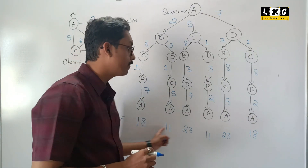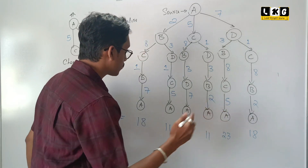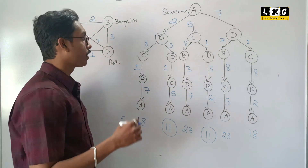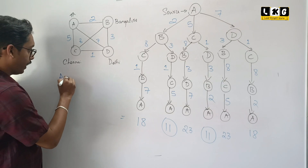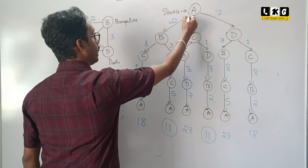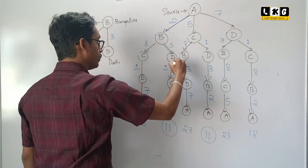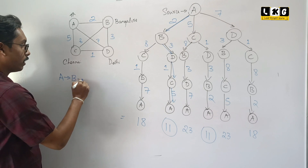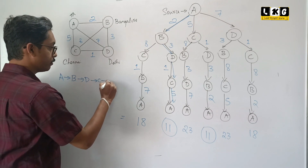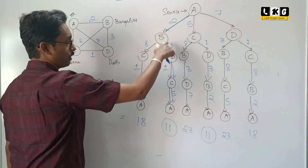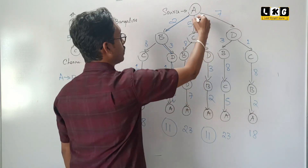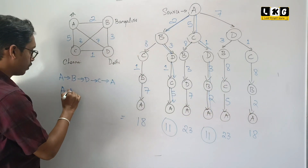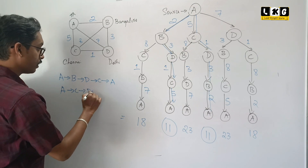We need to find which is the minimum cost. The minimum cost we got is 11 as well as 11 — we have got 2 minimum costs. What is that route? We need to write down the route. We are following this route — I will mark it with the blue marker. A to B, B to D, D to C, and then from C to A. This is the minimum cost. The second way: A to C, C to D, D to B, and then from B to A.